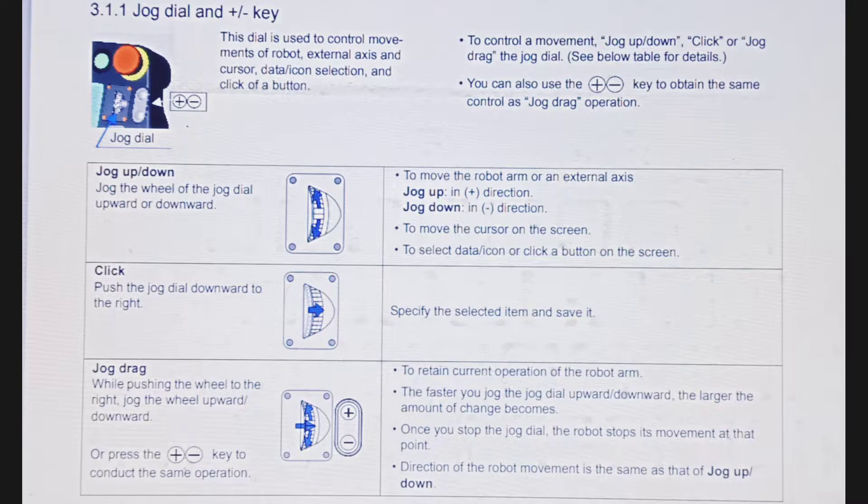Jog the wheel of the jog dial upward or downward to move the robot arm or an external axis. Jog up in plus direction, jog down in minus direction. You can also move the cursor on the screen to select data, icons, or click a button.